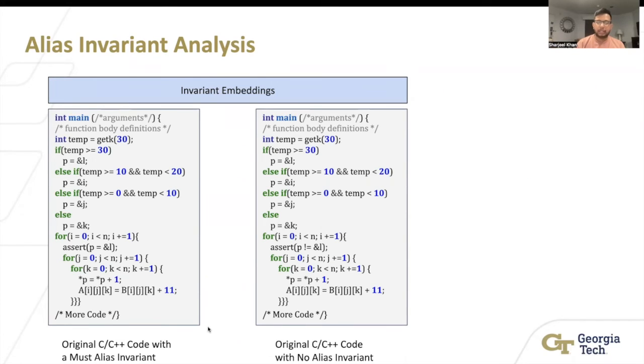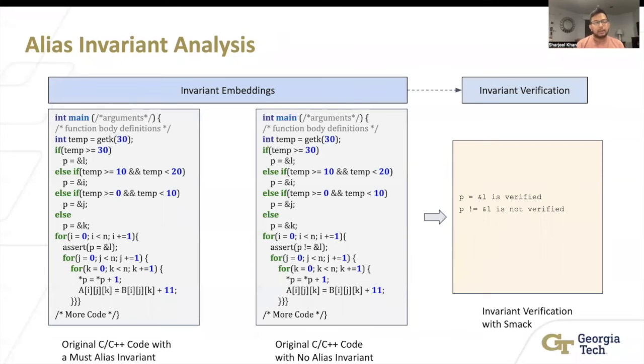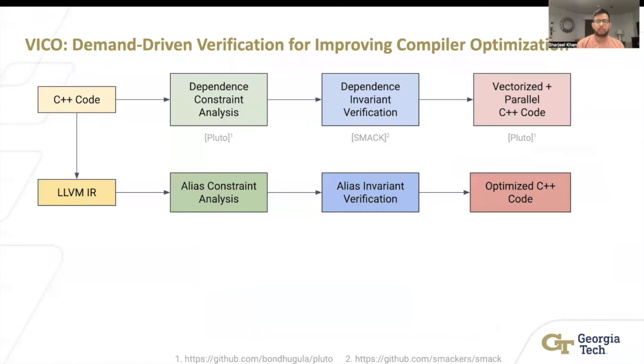We would first do must alias, see if it is true. If it is, we're done. We know the must alias. If it's not, then we do a no alias. And if that's not true also, then we just leave it as a may alias at the end. In this particular case, p does point to L, because if we use the getK function from before, we know that temp will always be greater than or equal to 30.